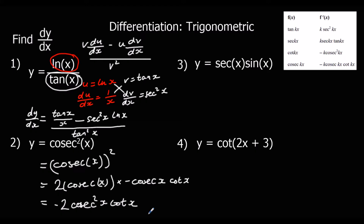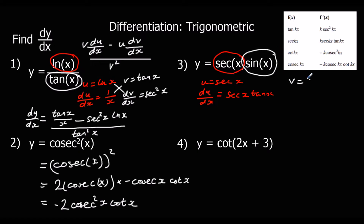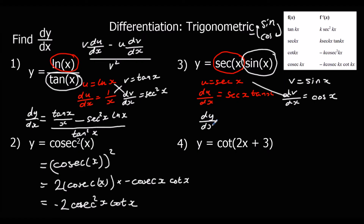Question three: we've got two functions multiplied together, so this is a product rule question. Let u equal sec x, so du/dx is sec x tan x. And v is sin x, which means dv/dx is cos x. Applying the product rule: u dv/dx is sec x cos x, plus v du/dx, which is sin x sec x tan x.